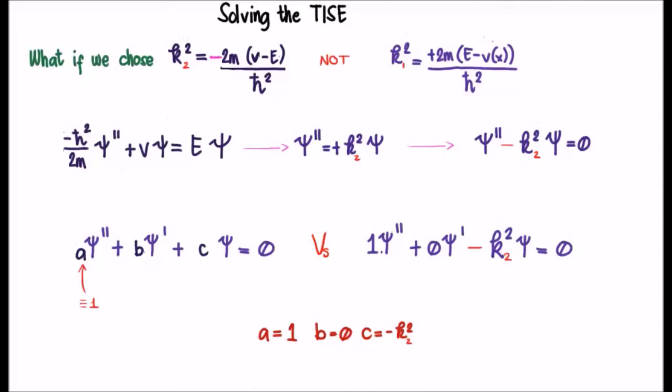And what we'll see is that the functional form of the solutions to the differential equation will look different, but of course the information they contain will be the same. So here's our Time-Independent Schrodinger Equation. And what I'm going to do is rearrange it such that we can use k₂ squared, and this is how it will look. Of course this, by the way, is a homogeneous equation in that one side of the equals is zero.